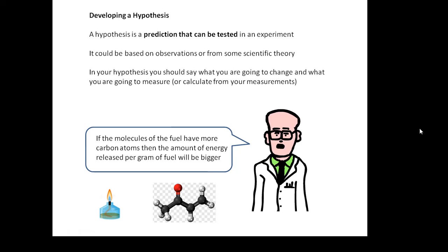A hypothesis is basically a prediction that can be tested in an experiment. You make a prediction and then you test your prediction in an experiment. It could be based on observations or some form of scientific theory. In your hypothesis, you should say what you're going to change, the type of fuel, fuels with different numbers of carbon atoms, and what you are going to measure or what you're going to calculate from your measurements, the amount of energy released per gram of fuel. What you'd actually measure is a temperature rise, but from that you would calculate the energy.